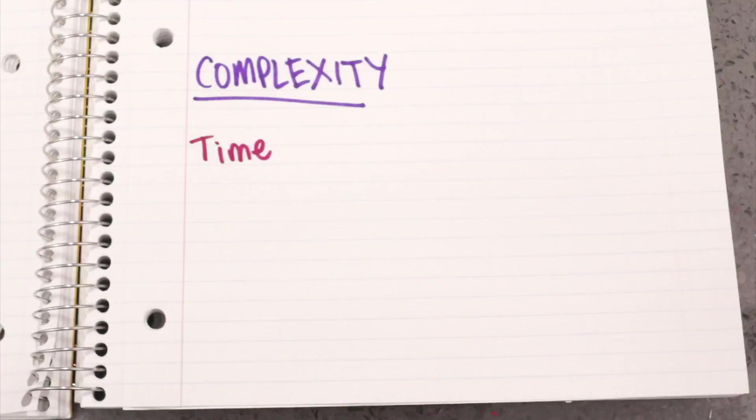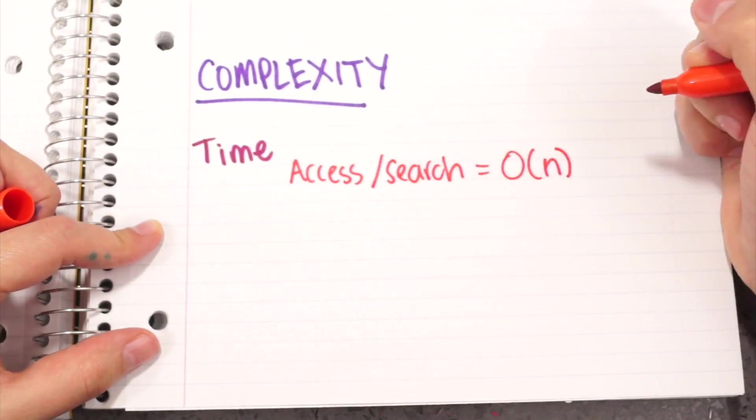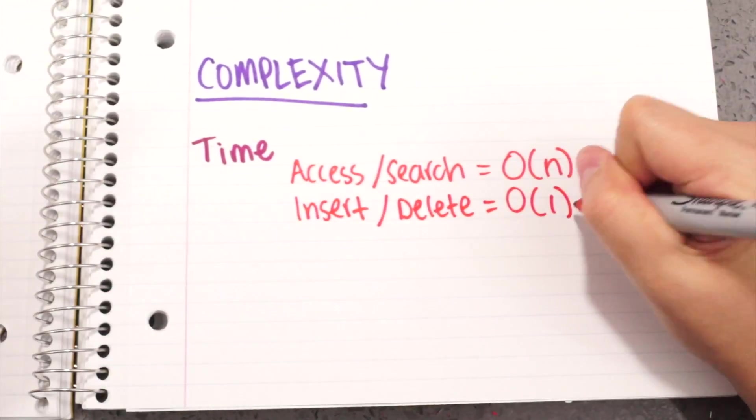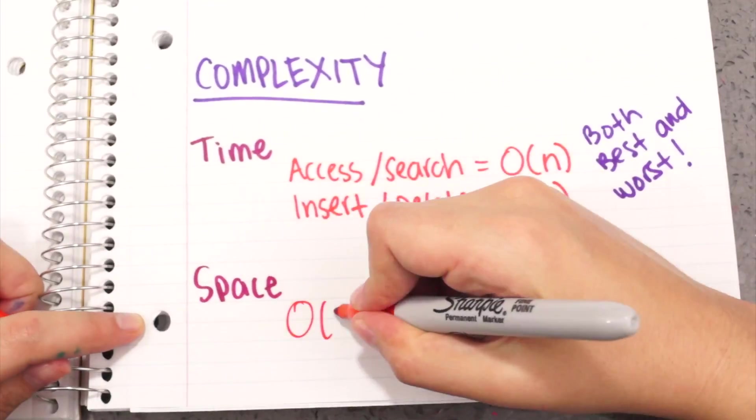The time complexity to access or search for a node in a linked list is O(N). Once you've traversed the list, inserting or deleting the node is only O(1). The space complexity is O(N).